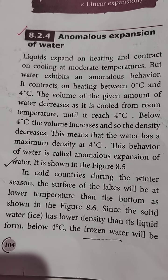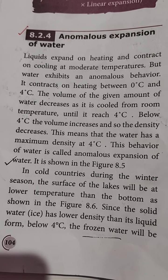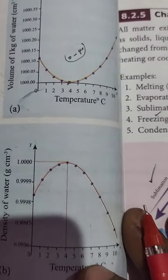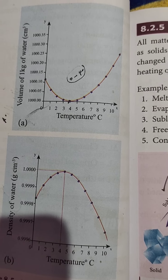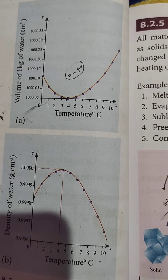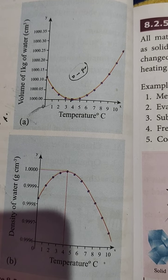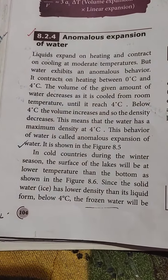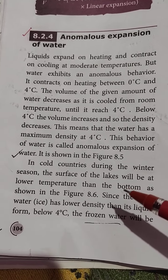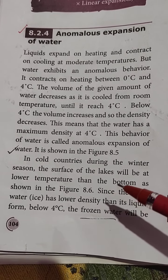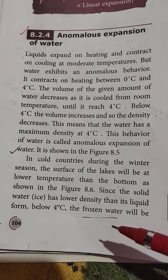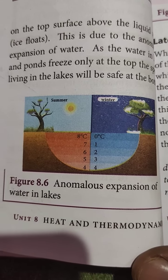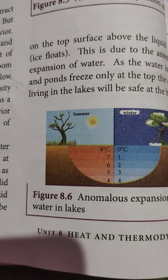As shown in figure 8.5, when water reaches 4°C it gains maximum density. In cool countries during winters, the surface of lakes will be at a lower temperature than the bottom, as shown in figure 8.6. This is the anomalous expansion of water in lakes.